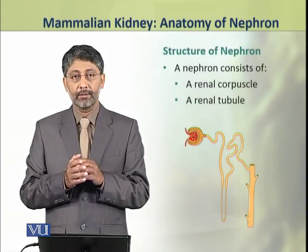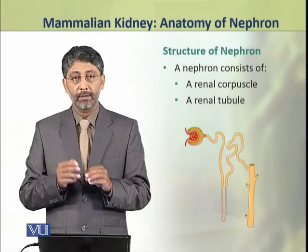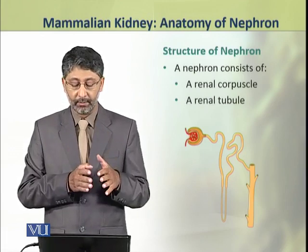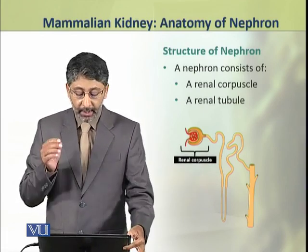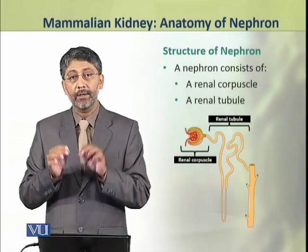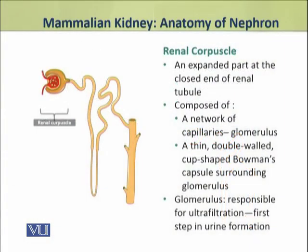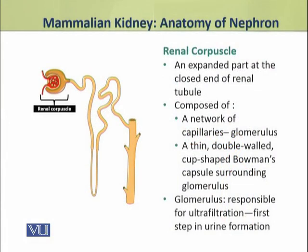A nephron consists of two major units: the renal corpuscle and the renal tubule. The renal corpuscle is an expanded part at the closed end of the renal tubule. It is composed of a network of capillaries which is called the glomerulus.